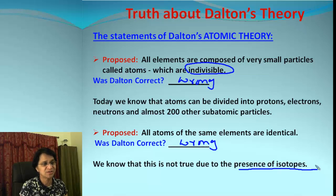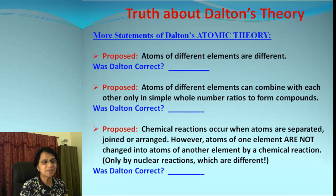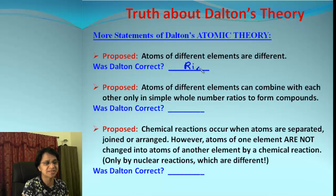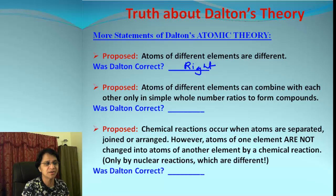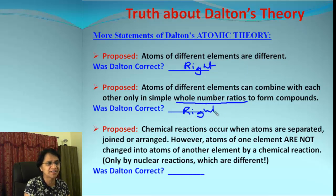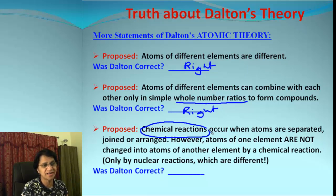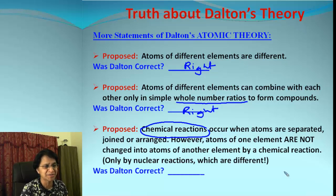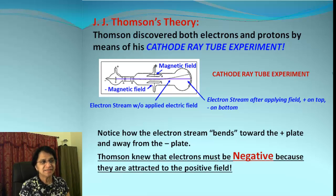Isotopes are like twin brothers and sisters — they have different masses, so not all atoms of the same element can be identical. Dalton proposed that atoms of different elements are different — was he correct? Yes, absolutely. He also proposed that atoms of different elements combine in simple whole number ratios to form compounds — correct again. Finally, atoms of one element cannot be changed into atoms of a different element unless there is a chemical reaction, likely a nuclear reaction — and Dalton was completely right about that.